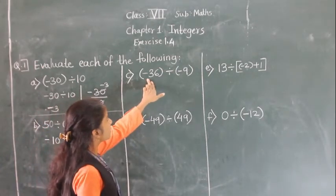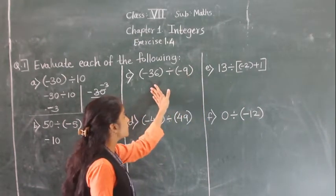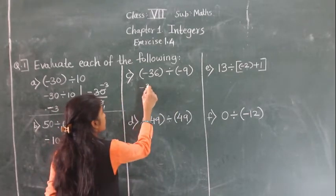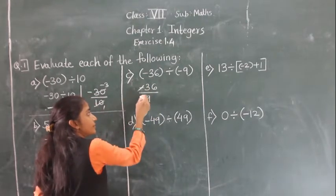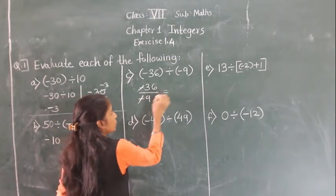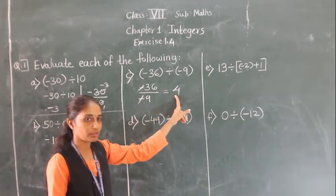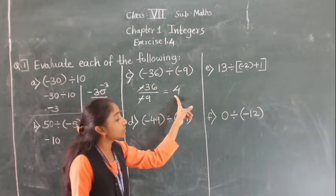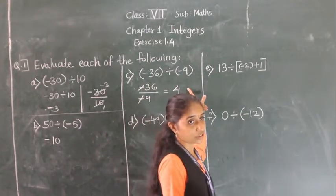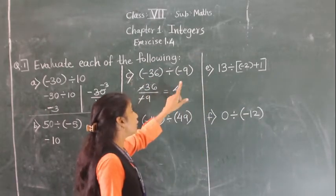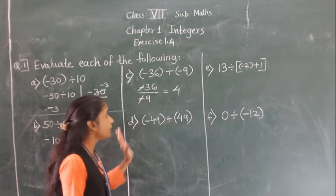Next, part (c): minus 36 divided by minus 9. The two minus signs cancel each other. So 9 fours are 36, and the answer is positive 4. When we divide a negative integer by a negative integer, we divide them as whole numbers and put a plus sign before the answer.